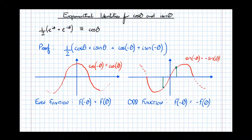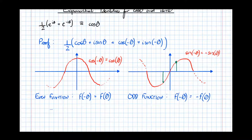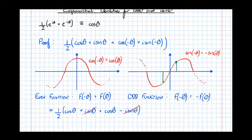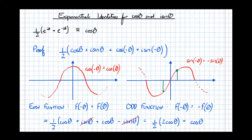So we can use the fact that cos θ is an even function and sin θ is an odd function to simplify our expression. Our previous line becomes a half of (cos θ + i·sin θ + cos θ − i·sin θ). The i·sin θ terms cancel, leaving a half of 2 cos θ, which equals cos θ. We've proved the first identity.